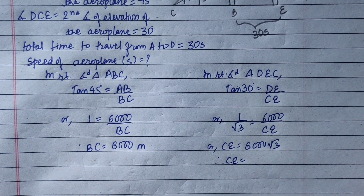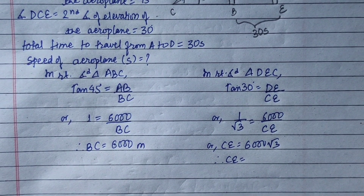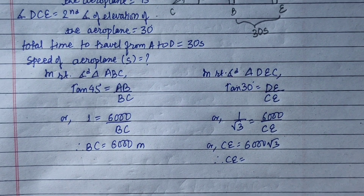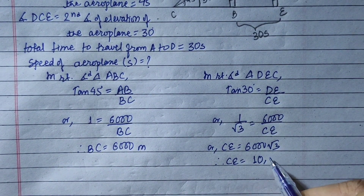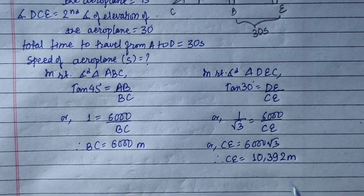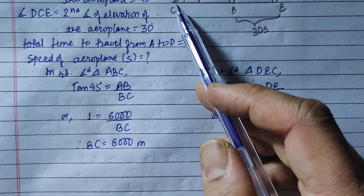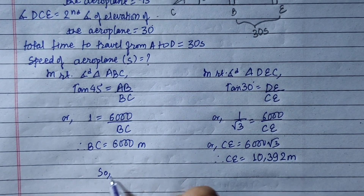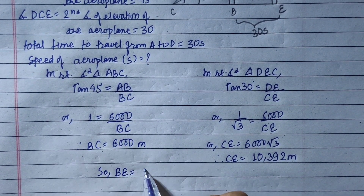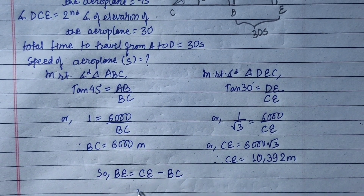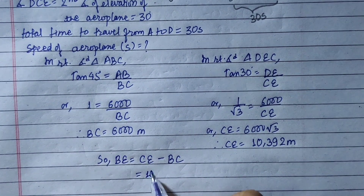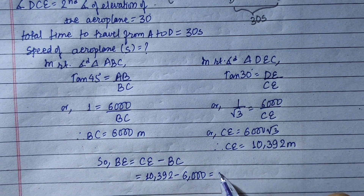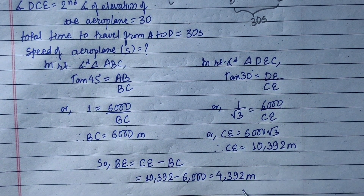Root 3 equals 1.732. So CE equals 6,000 into 1.732, which gives 10,392 meters. Now, CE equals CB plus BE. Therefore BE equals CE minus BC, which is 10,392 minus 6,000, giving BE equals 4,392 meters.